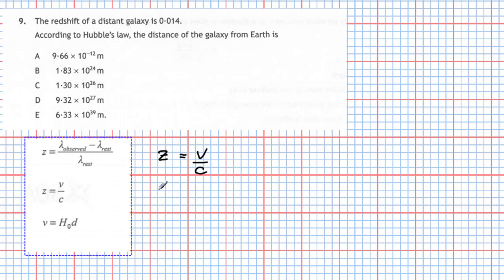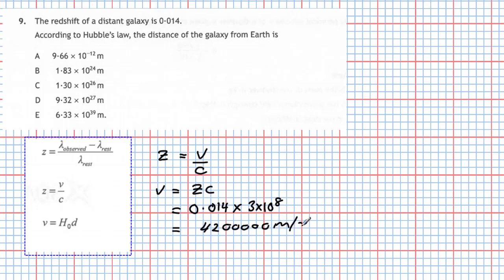Rearranging: the recessional speed v equals redshift z times c. Plugging in numbers: z is 0.014, times the speed of light 3 × 10⁸, giving the recessional speed. Now that we have the recessional speed, we move on to the third equation: v equals Hubble's constant times d, where d is the distance we're looking for.